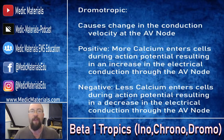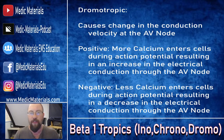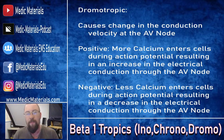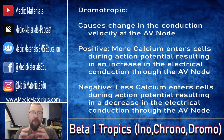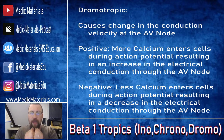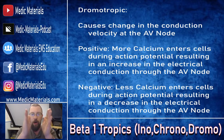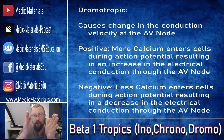Lastly, we have dromotropic. Dromotropic effects change the conduction velocity at the AV node. Remember, after the SA node fires, the signal travels down through the right ventricle into the AV node, where it pauses. There is always a pause at the AV node — this is the pause on your EKG between your P wave and your Q wave.